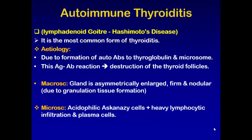It is the most common form of thyroiditis. The etiology is due to formation of autoantibodies against the thyroglobulin and microsomes inside the thyroid follicles, and there will be an antigen-antibody reaction that ends in the destruction of thyroid follicles. In Hashimoto's thyroiditis, the thyroid gland is asymmetrically enlarged, firm, and nodular due to granulation tissue formation inside the thyroid gland.